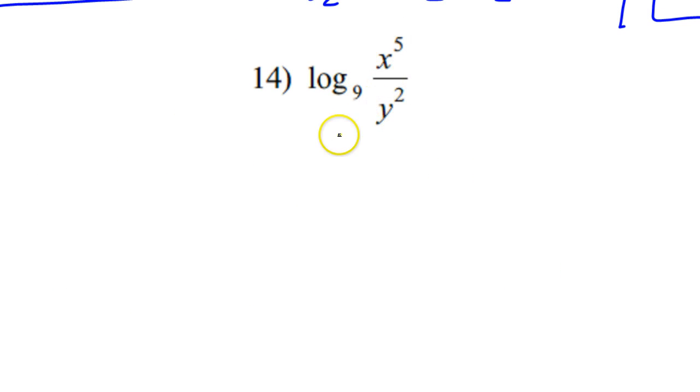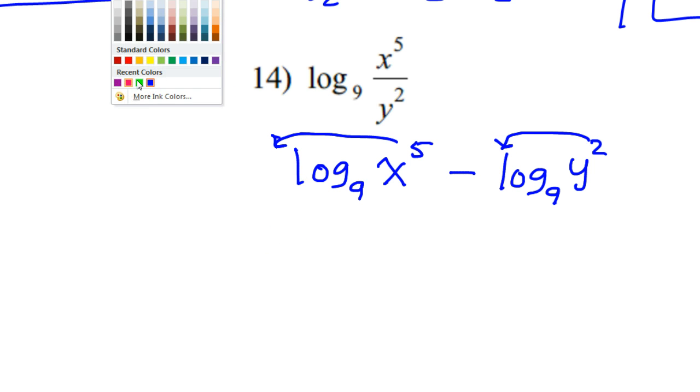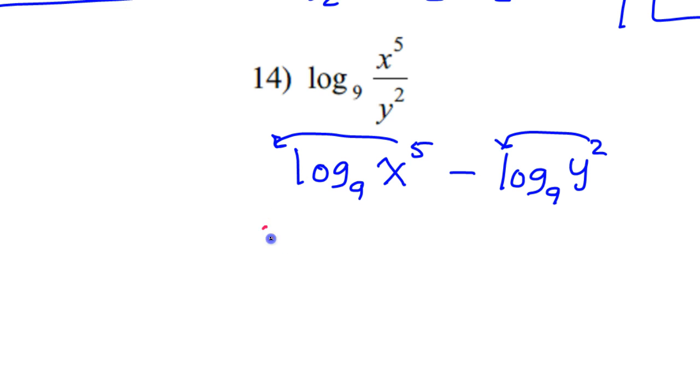So when you have the log of a fraction and you're expanding, you're going to break this apart as the log of the numerator minus the log of the denominator. All right, these exponents are each going to jump to the front of their term. So that's why, and this is really going to be the final answer right now. We're going to have 5 log base 9 of x minus 2 log base 9 of y.